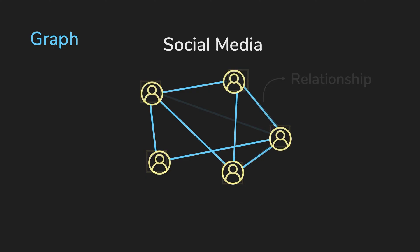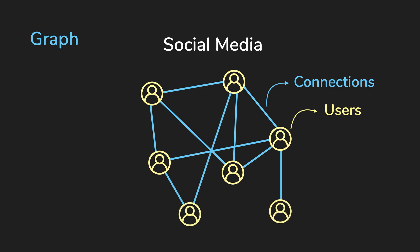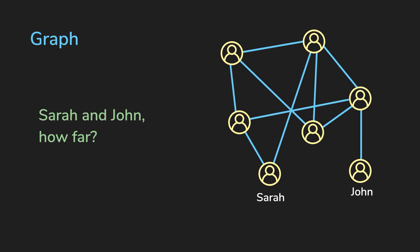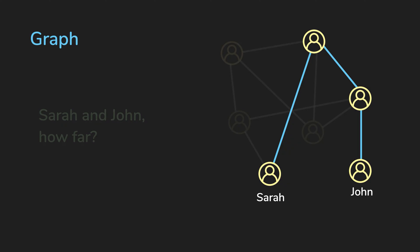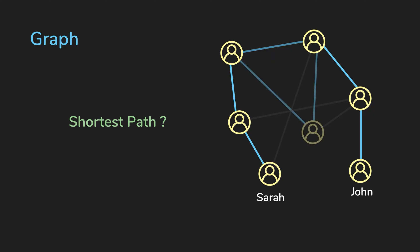For example, if you have a social network like Facebook, users are basically vertices and friendship connections between users are edges. Representing your data this way allows us to run algorithms that can answer questions like, how many degrees of separation are between Sarah and John? If Sarah wants to meet John, who are the people she should get introduced to before getting there? A.k.a. what is the shortest path from Sarah to John?